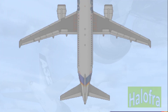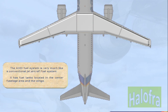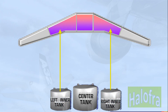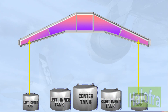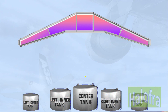The A320 fuel system is very much like a conventional jet aircraft fuel system. It has fuel tanks located in the centre fuselage area and the wings. The centre tank is located in the fuselage, and the inner and outer tanks are located in the wings. The total usable fuel quantity is approximately 19,000 kilograms at standard density.